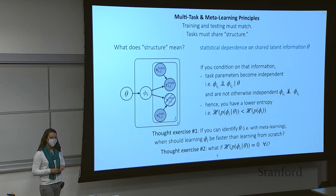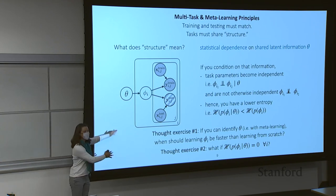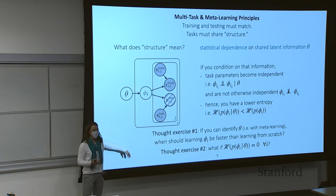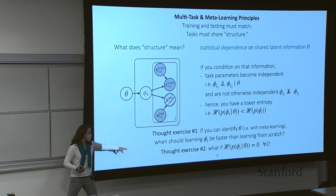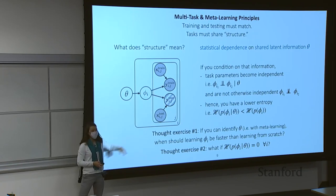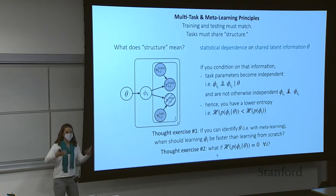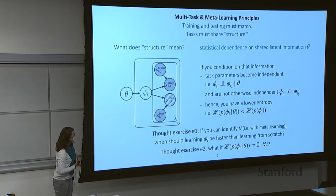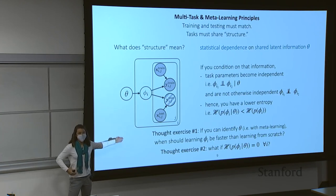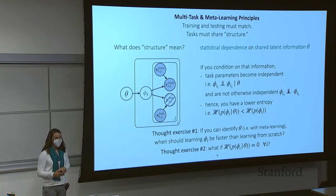This framework lets you think about things like memorization, which happens exactly when entropy of phi_i given theta is zero. It also helps you think about whether you're going to get efficiency compared to learning from scratch. Another scenario where this comes up is if you've already built structure into your optimizer or function approximator — in those cases, identifying theta won't necessarily be faster than learning from scratch because you already built that structure into your optimization.